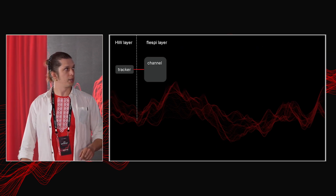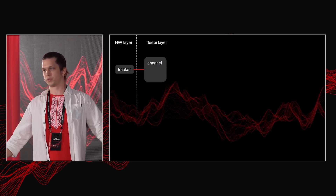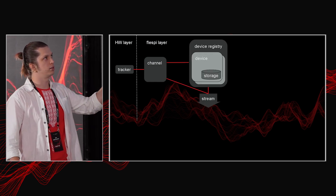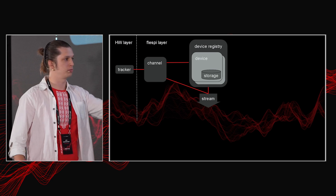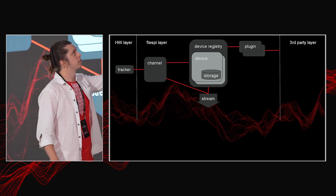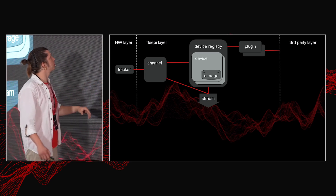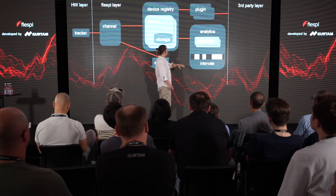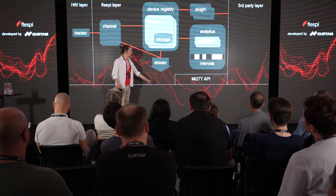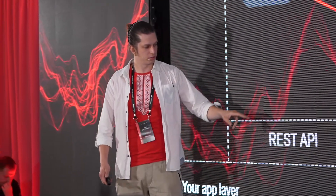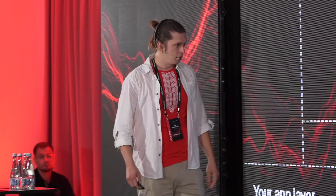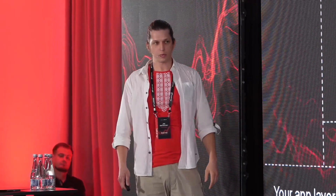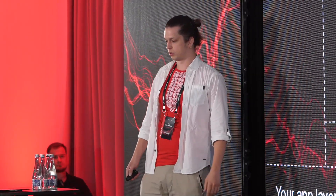First, let's recap what we know. You'll see schemes during this conference. So: tracker channel, then it goes to device, then to a stream to send data. Plugins may pull data from third-party platforms. In analytics we have calculators that count intervals. Everything is available in event mode via MQTT API and in REST API to manipulate all this. This is the core schema — we'll use it later for visualizations on new features.